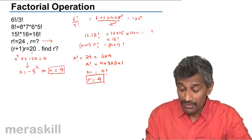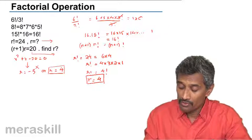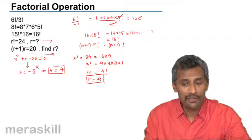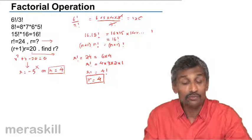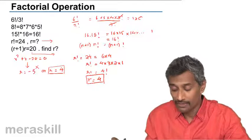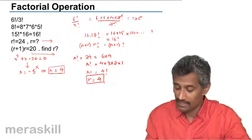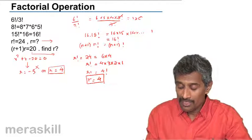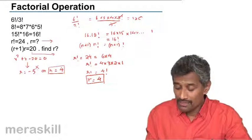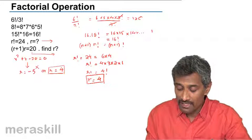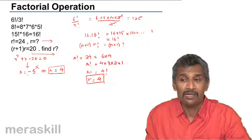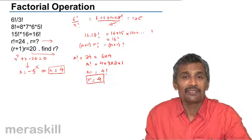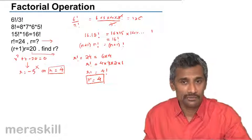It is also interesting to note that R+1 into R factorial is the same as (R+1)!. This example was given to make you understand why we discard the negative value — because R or N indicate the number of terms involved and cannot be negative. This is how we understand the concept of factorial.